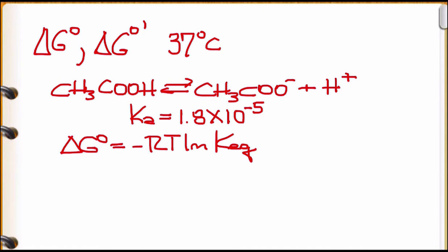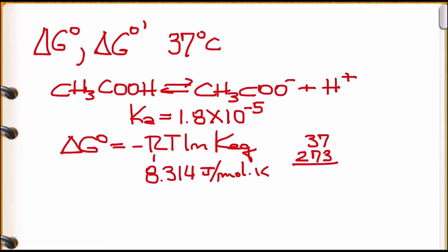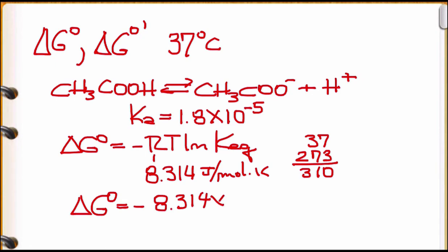We know that R = 8.314 J/mol·K. The temperature is 37°C, which in Kelvin is 37 + 273 = 310 K. So ΔG° = −8.314 × 310 × ln(Ka), where Ka is the logarithm of the equilibrium constant.